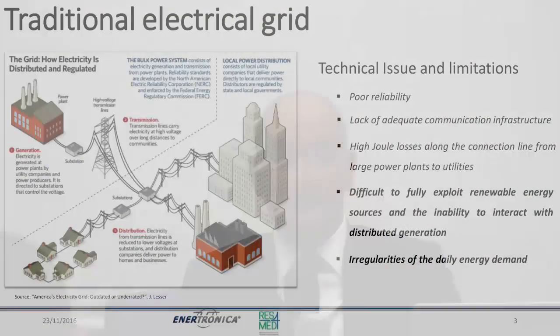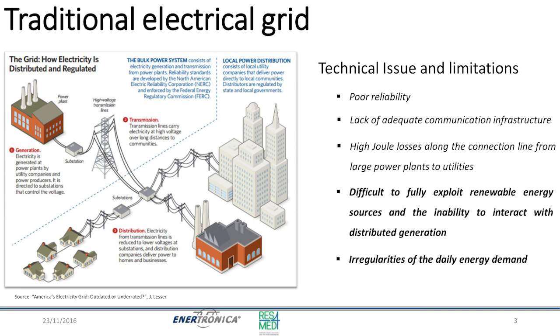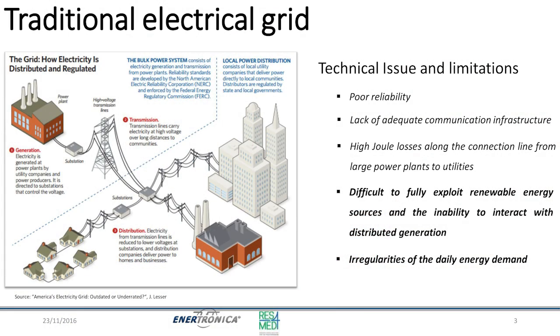What is the difference between a traditional grid and a smart grid? The main difference is that a smart grid is smart, while a traditional grid is generally a stupid or fixed grid. If we have a traditional grid, we can have poor reliability, a lack of adequate communication infrastructure, a lot of Joule losses, and great difficulties in fully exploiting renewable energy sources.